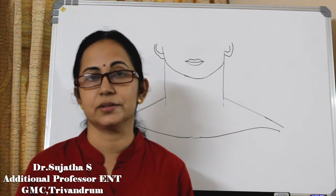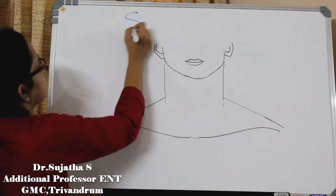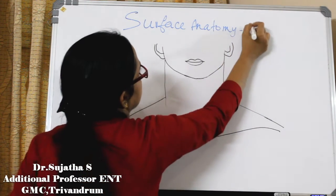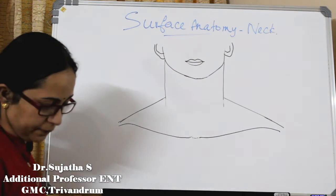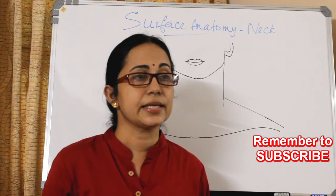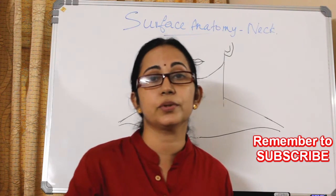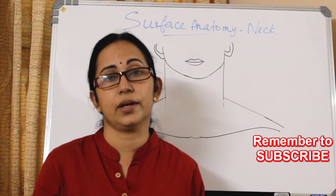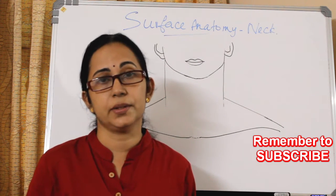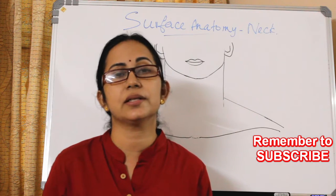Surface anatomy of any body part is very important. Today I will explain about surface anatomy of the neck. Why is it important? Because one needs to put correct skin incisions during surgeries, and second, to give local infiltration of anesthesia. We palpate certain surgical surface landmarks, identify the underlying structures, and then give local anesthesia. This surgical anatomy is also important to get an idea of the structures within the body. Residents and undergraduates will get exam questions on this, and for the clinician it is very important.